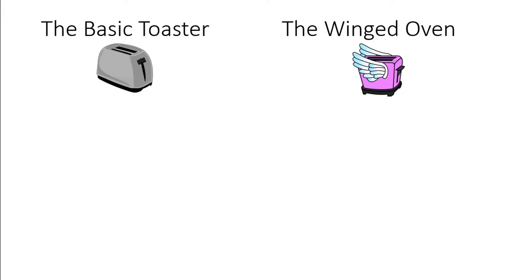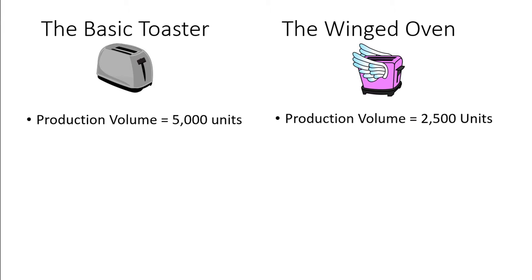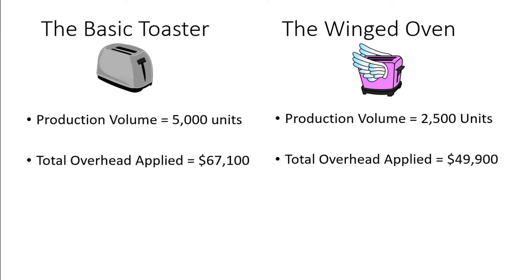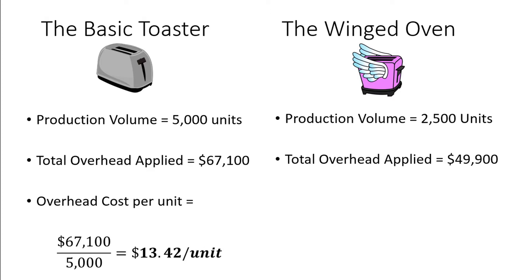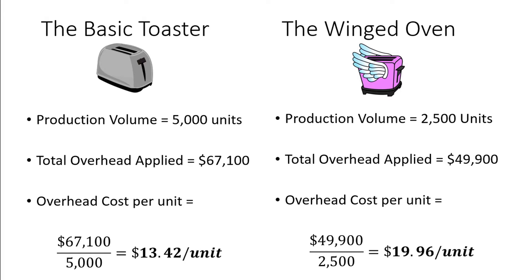We produced 5,000 basic toasters and 2,500 winged ovens. Taking the $67,100 of basic toaster overhead costs applied and dividing by 5,000 units gives us $13.42 of overhead costs per unit. Taking the $49,900 of winged oven overhead costs applied and dividing by 2,500 units gives us $19.96 of overhead costs per unit. Don't take the overhead costs per unit too literally — since overhead costs include fixed costs, producing an additional winged oven does not mean we will have an additional $19.96 of overhead costs. Just view this as the amount of overhead costs allocated per unit.